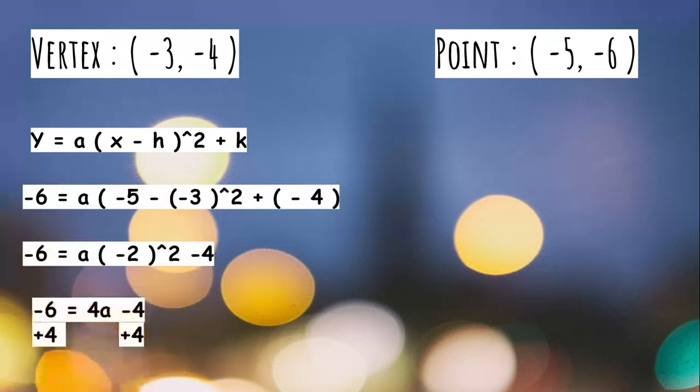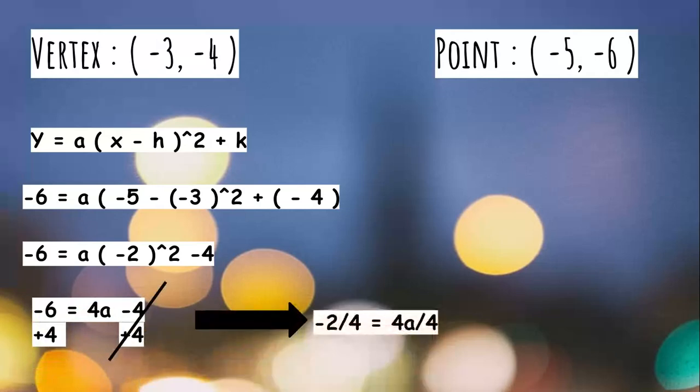We're going to add 4 to both sides. We're going to cancel this. We're going to have -2 = 4a, so -2/4 = 4a/4. The answer is a = -1/2.